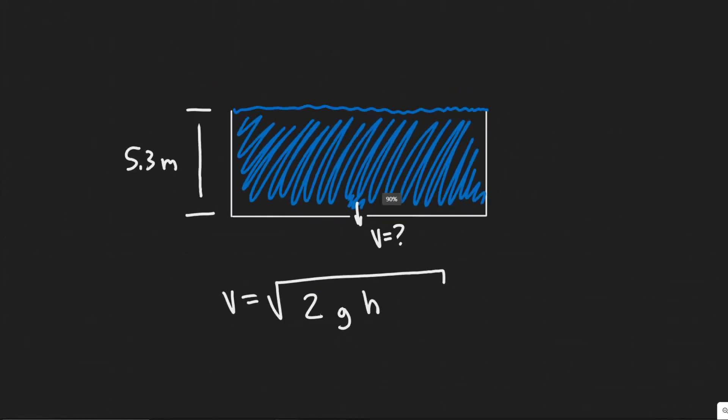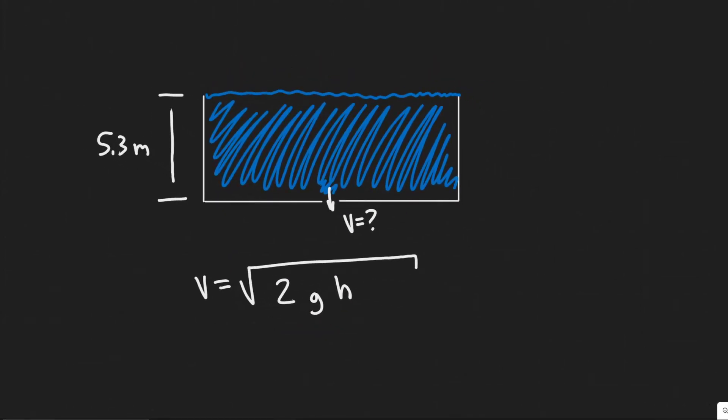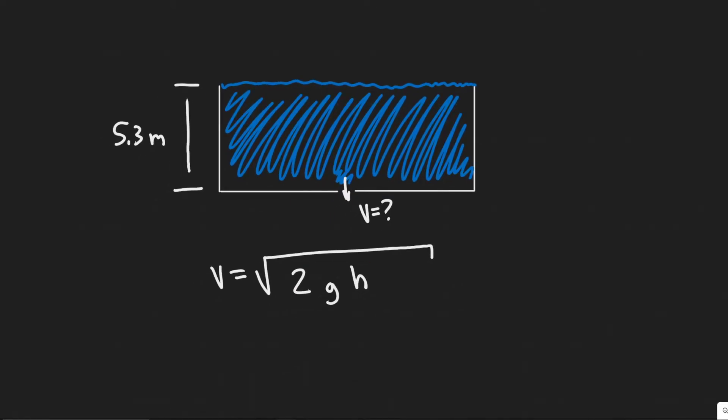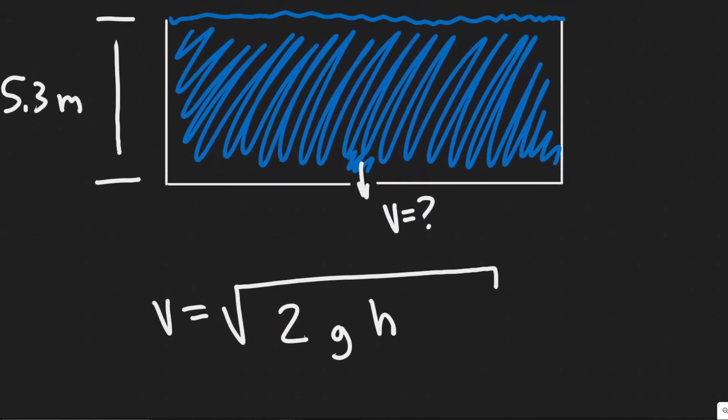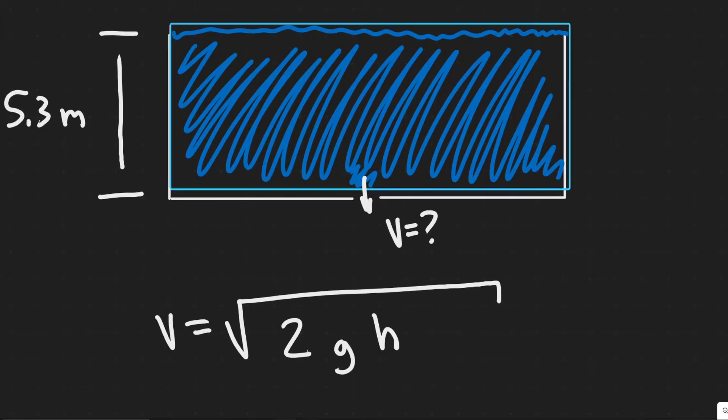And so in order to find the velocity at which the water is going to flow out of this hole, it's really just using a basic formula which is Torricelli's formula which basically tells us the velocity at which water will flow out of a hole relative to if it's in some tank using this formula.